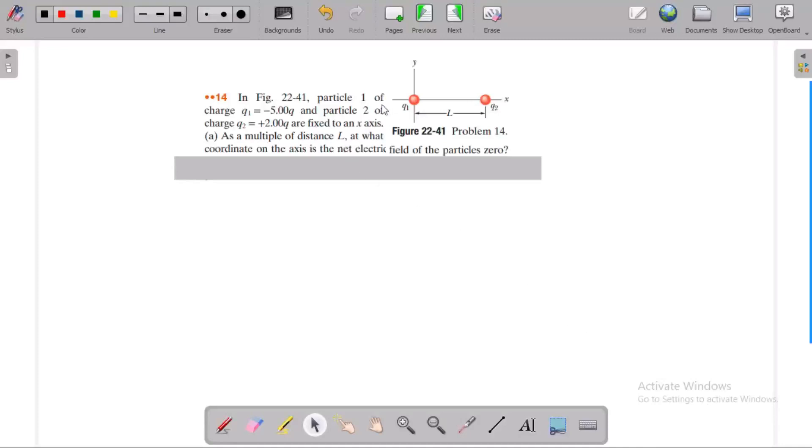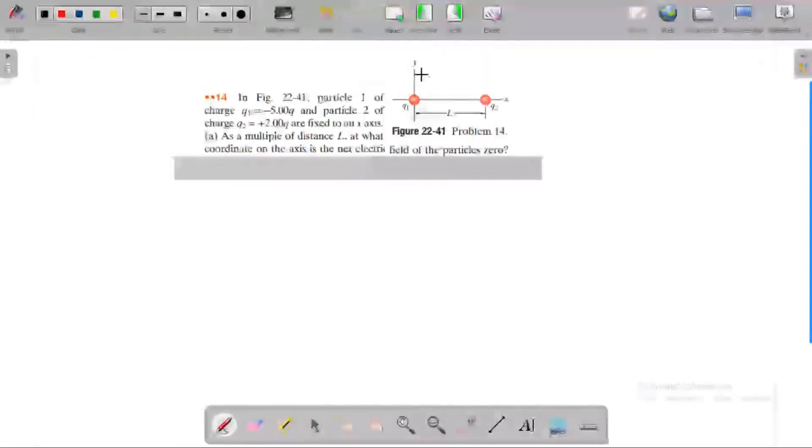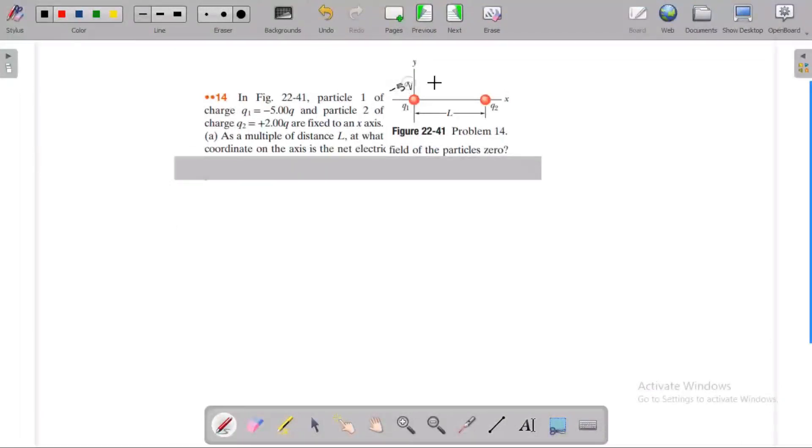In this question, particle 1 has charge minus 5Q, and particle 2 has charge plus 2Q.